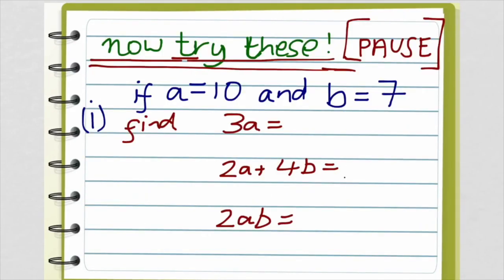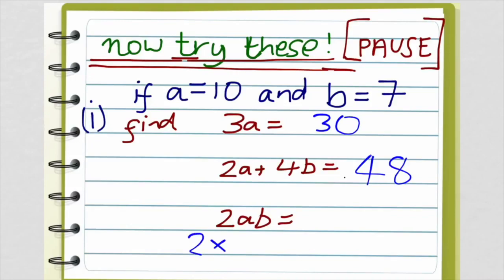Okay, now some for you to try — pause the video. Now that you've had a go at those, let's see if you got them correct. 3a means 3 times a, 3 times 10 — nice and easy — 30. 2a plus 4b: 2 times a is 20, 4 times b is 28, add them together is 48. And 2ab — that's the same as saying 2 times a times b, which is the same as 2 times 10 times 7, which equals 140.